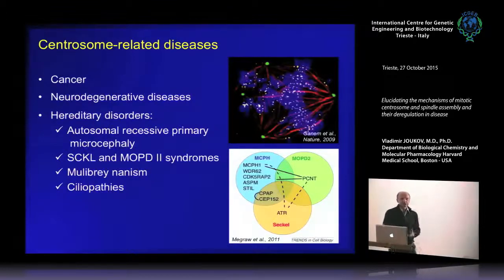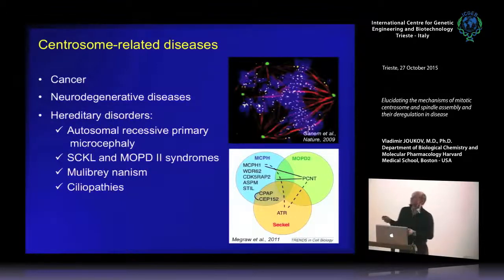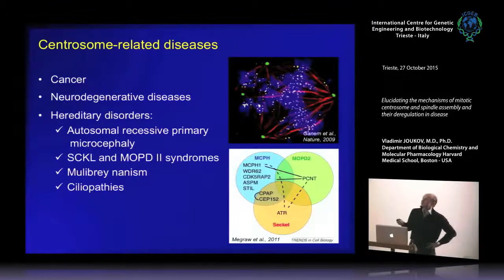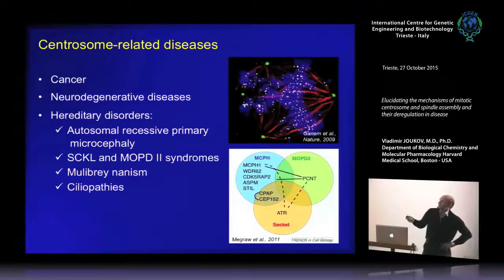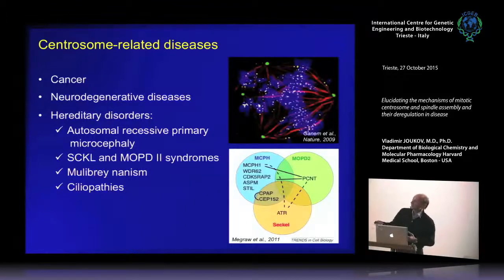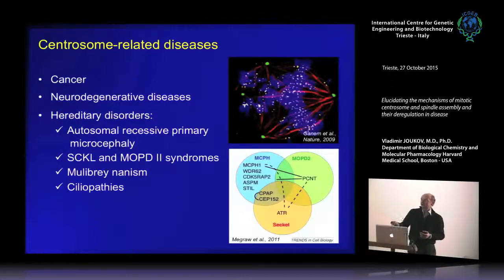Functional or numerical centrosomal abnormalities have been linked to diseases. Centrosome amplification is a hallmark of cancers. Centrosomes have also been implicated in neurodegenerative diseases and hereditary disorders — there are three major microcephaly syndromes caused by mutations in centrosome and spindle pole proteins, as well as rare disorders such as Seckel syndrome, which targets mesenchymal tissues. And of course, centrosomes are involved in the formation of cilia and related ciliopathies.